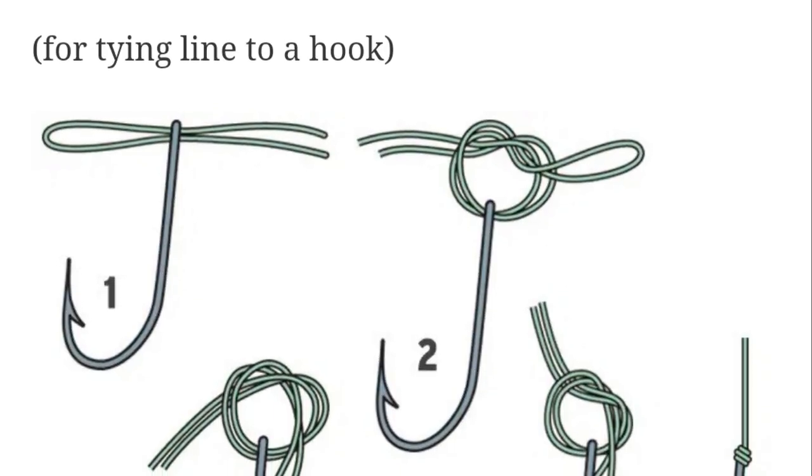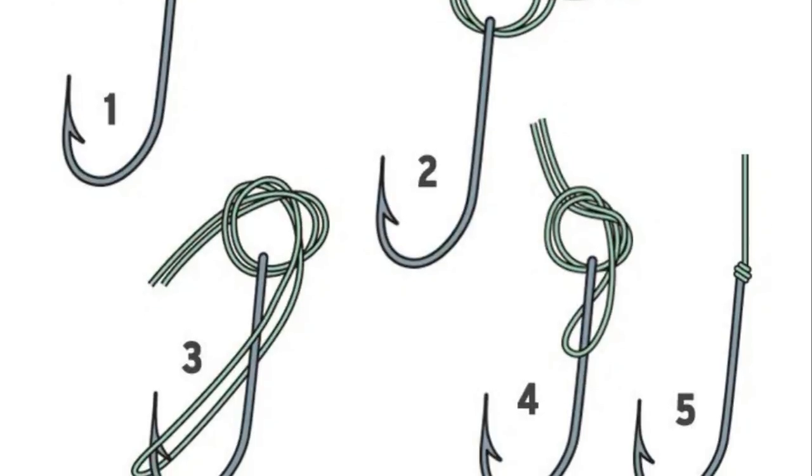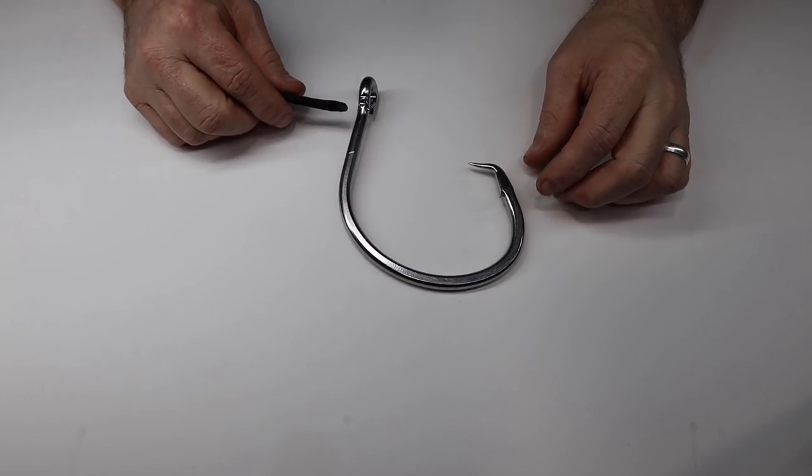Fishing knot number two, the Palomar knot. Now the next knot we're tying is a Palomar knot. The Palomar knot is one of my favorite knots to tie. It has a 96% knot strength. Most people will tell you to make a loop in your line and stick it through the eye.